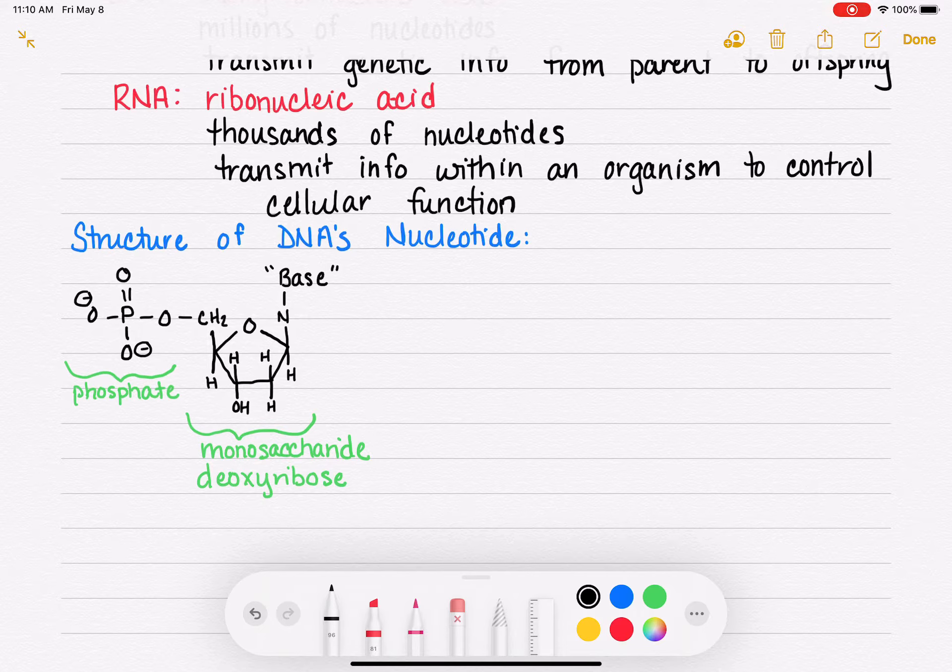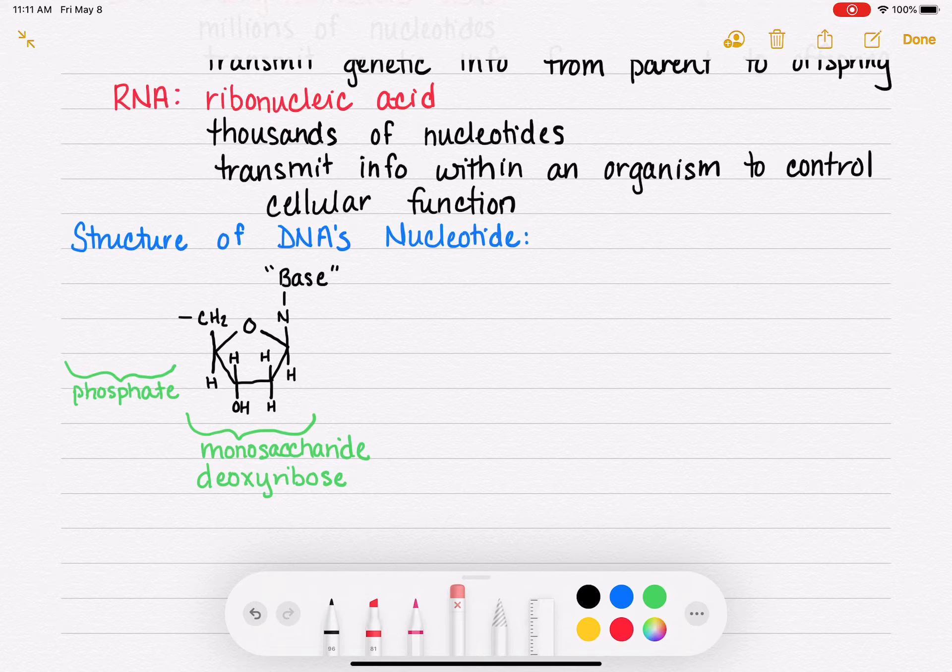So going back to what's the difference between a nucleoside and a nucleotide, what we just drew there is the full-on nucleotide. If we wanted to draw a nucleoside, it would look like this. So the phosphate would be gone. And the nucleoside is just the base and the monosaccharide component. So we'll put the phosphate back and now it's a nucleotide.